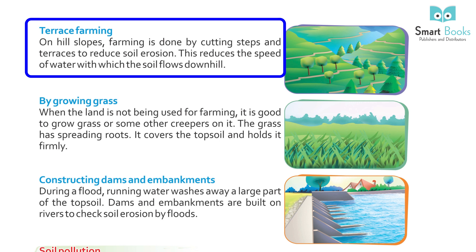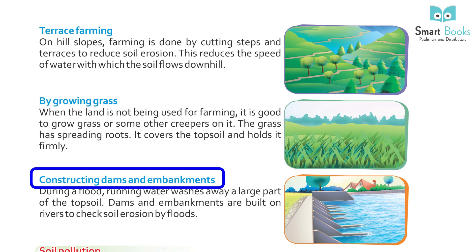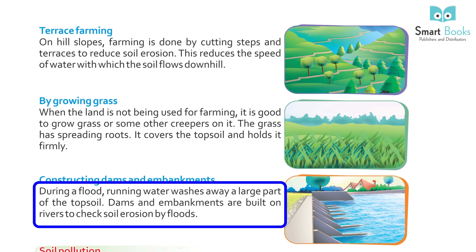Terrace farming: On hill slopes, farming is done by cutting steps in terraces to reduce soil erosion. This reduces the speed at which water flows downhill. When the land is not being used for farming, it is good to grow grass or some other creepers on it. The grass has spreading roots that cover the topsoil and hold it firmly. Constructing dams and embankments: During a flood, running water washes away a large part of the topsoil. Dams and embankments are built on rivers to check soil erosion by floods.